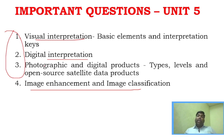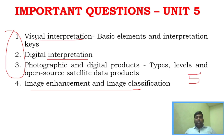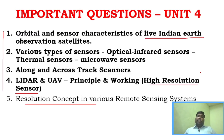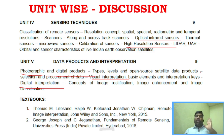For Part A of this subject, you have to study three to four questions per unit — two-mark questions. For example: what is a geostationary satellite, image rectification, image enhancement, image classification — these are typical two-mark questions from Unit 5 and Unit 4.